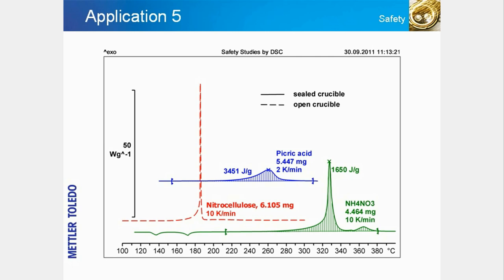The results provide information about the starting temperature of the reaction, the reaction rate, and the energy released when such substances with very large exothermic reaction energies decompose. For example, the enthalpy of reaction of 3,450 joules per gram for picric acid under adiabatic conditions would cause a temperature increase of more than 1,000 degrees.